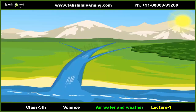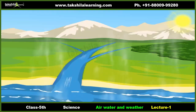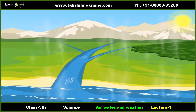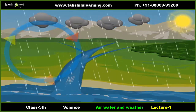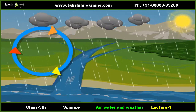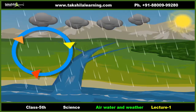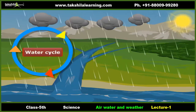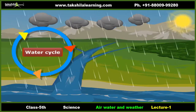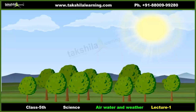Finally, the water reaches the water bodies and gets collected there. Water is constantly cycling from land to air and back to land again. This process is known as the water cycle. Therefore, water on our earth will never come to an end.